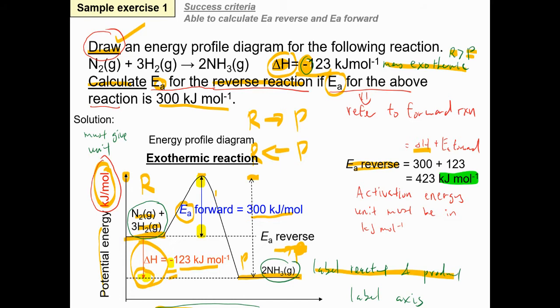The formula is: Ea(reverse) = ΔH + Ea(forward). Don't forget that the unit for activation energy — whether forward or reverse — must always be in kilojoules per mole.